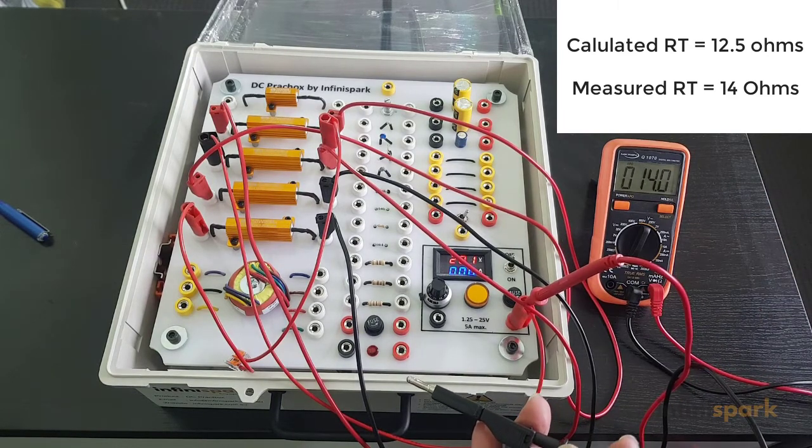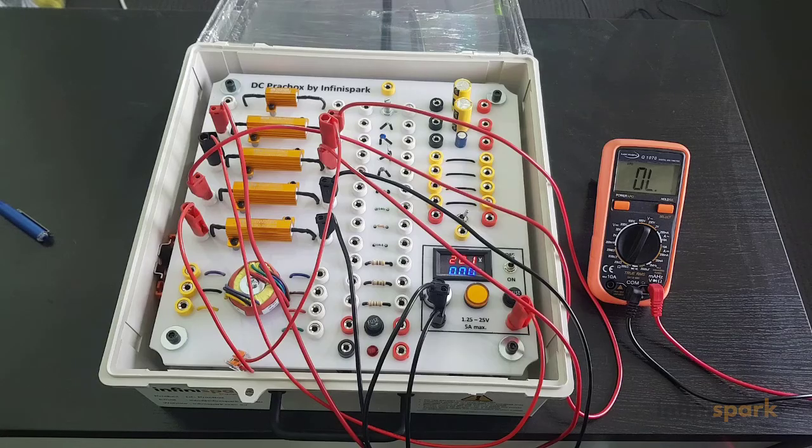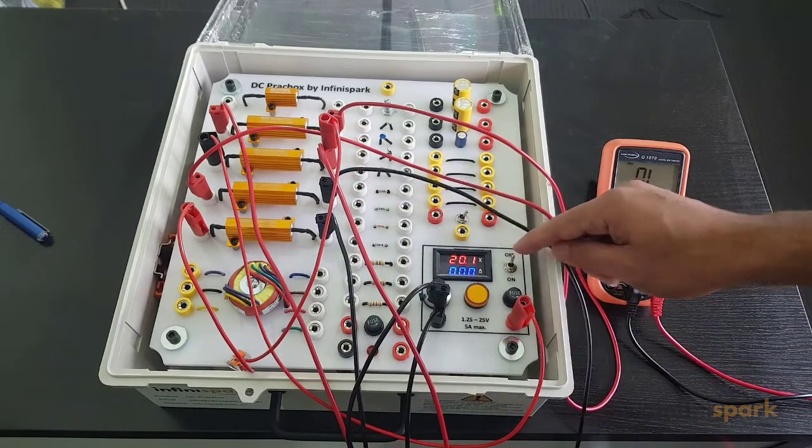With this RT, we can now find IT using Ohm's law: VT divided by RT. VT is 20 volts—the voltage across P and N—and RT is 12.5 ohms. So the total current is 1.6 amps. If I turn the supply on now, we should be able to see the current on the panel meter.